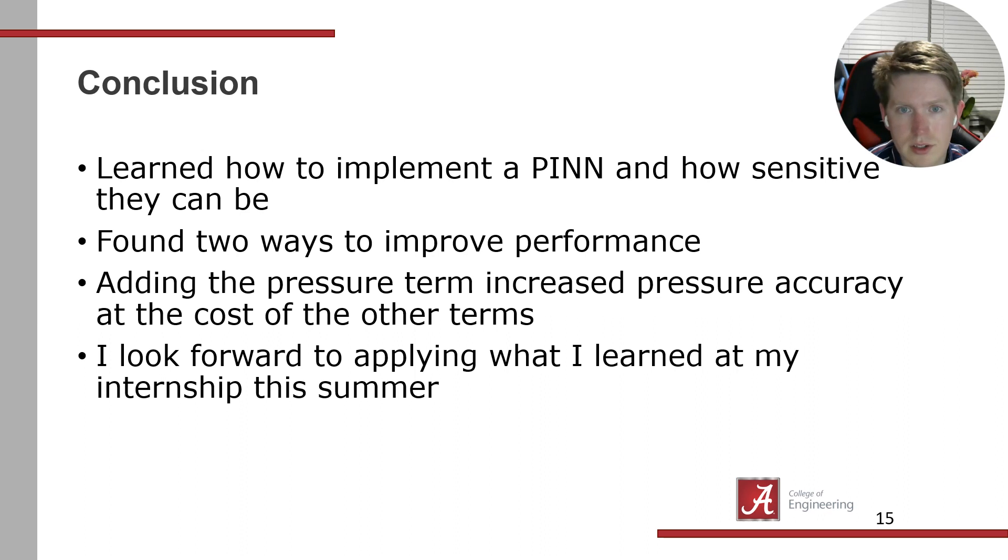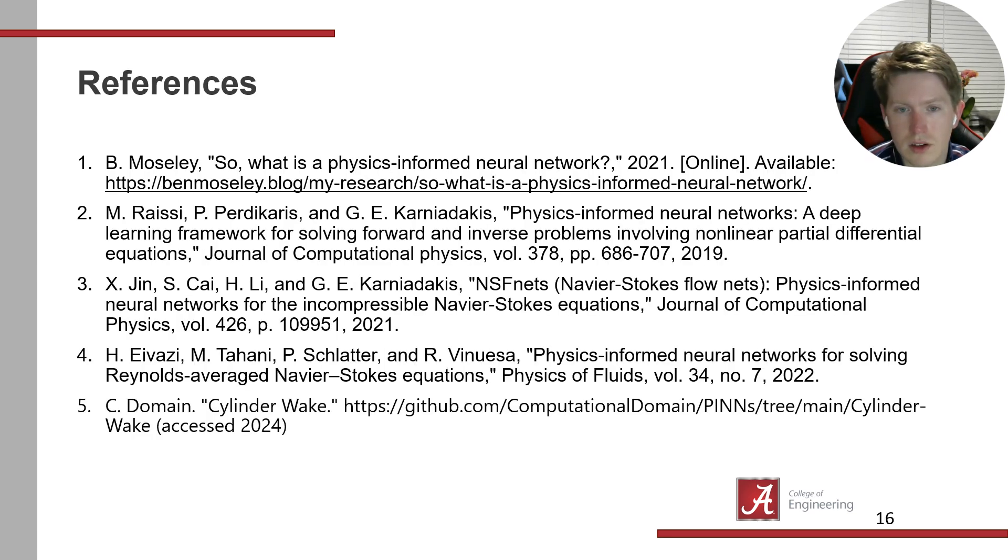Overall, I learned a lot from this project. I learned how to implement PINNs and how sensitive they can be. I didn't think changing activation functions would have such drastic consequences—only hyperbolic tangent worked well. I was happy to find two ways to improve performance, and even more that combining them made it better than the sum of parts. Adding the pressure term increased pressure accuracy but worsened gradients for everything else, so you have to balance what you're looking for. I look forward to applying this on my internship next summer. Here are my references.